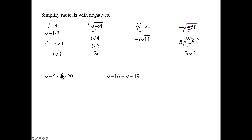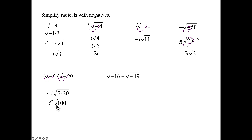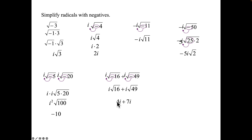When multiplying imaginary numbers, do not multiply the radicands together like real numbers. Take out the negative as i from each factor — you now have i times i on the outside. The 5 and 20 are positive so multiply them: i squared times √100. i squared equals negative 1, √100 = 10, so the answer is negative 10. For √(−16) + √(−49): take out i's — √16 = 4 giving 4i, √49 = 7 giving 7i. These are like terms: 4i + 7i = 11i.